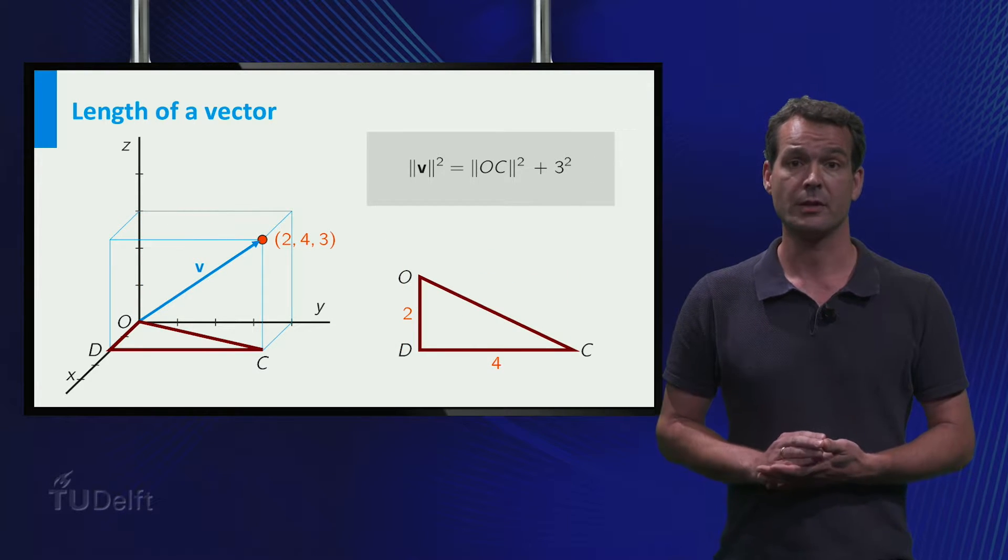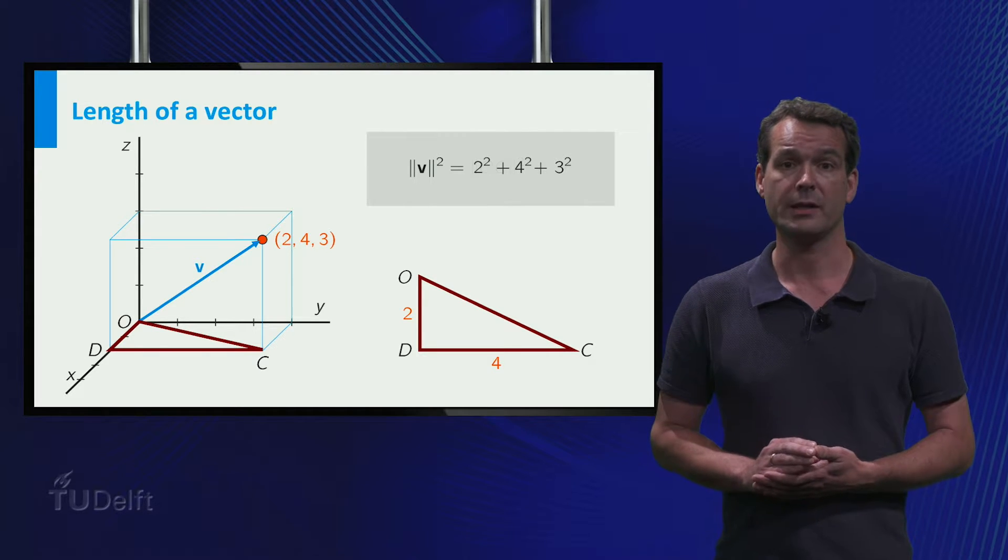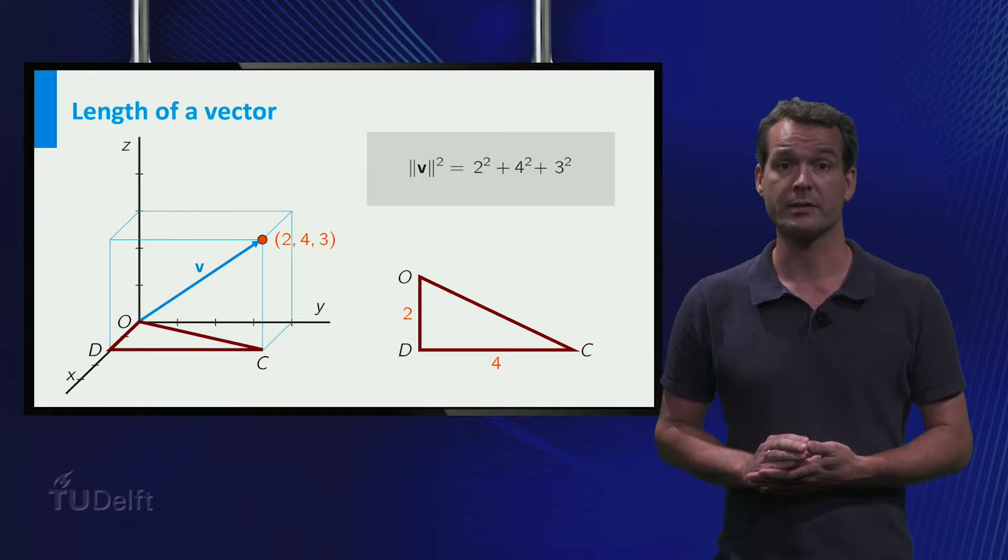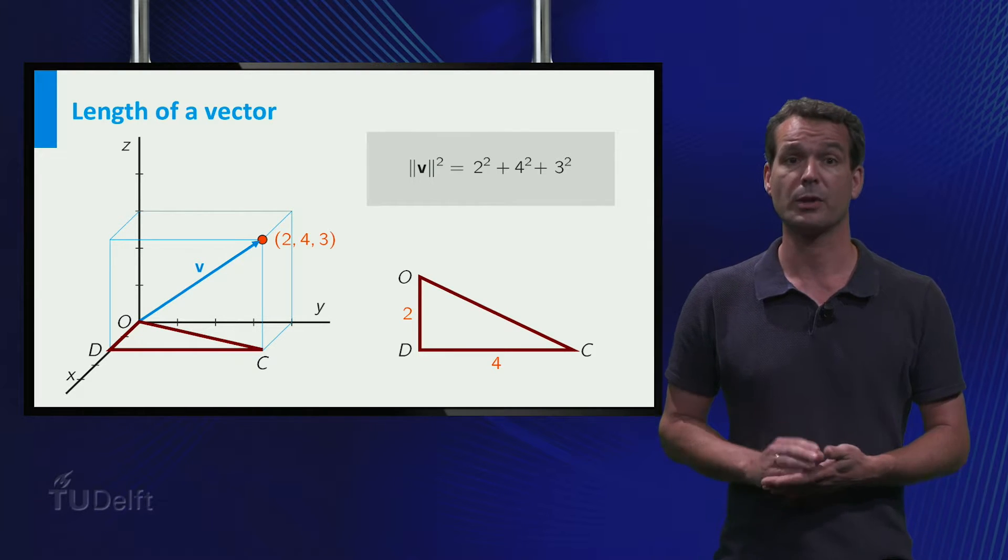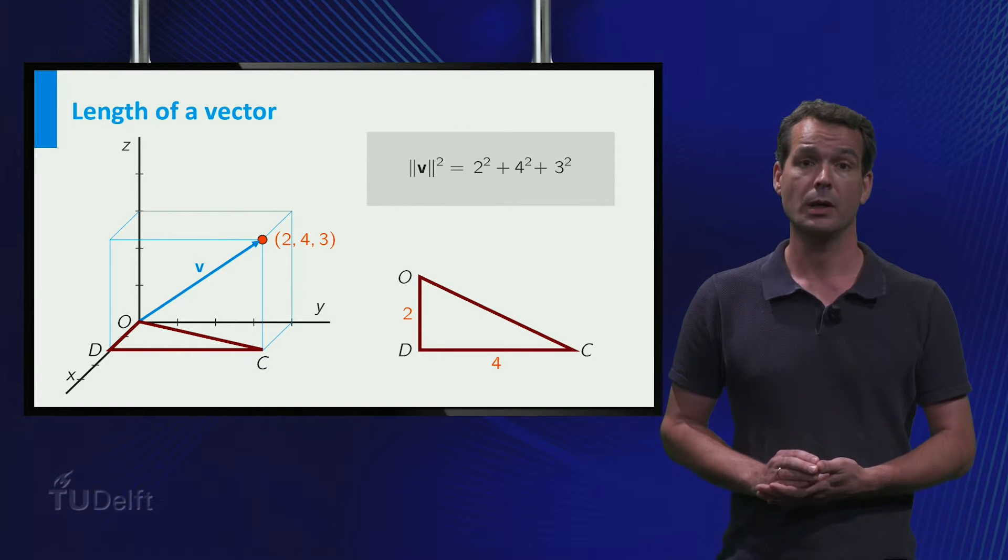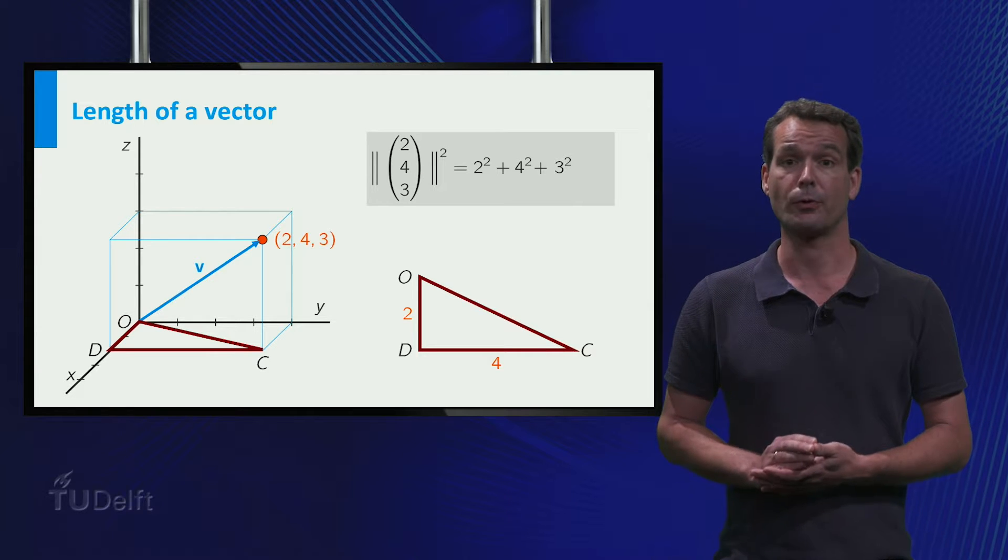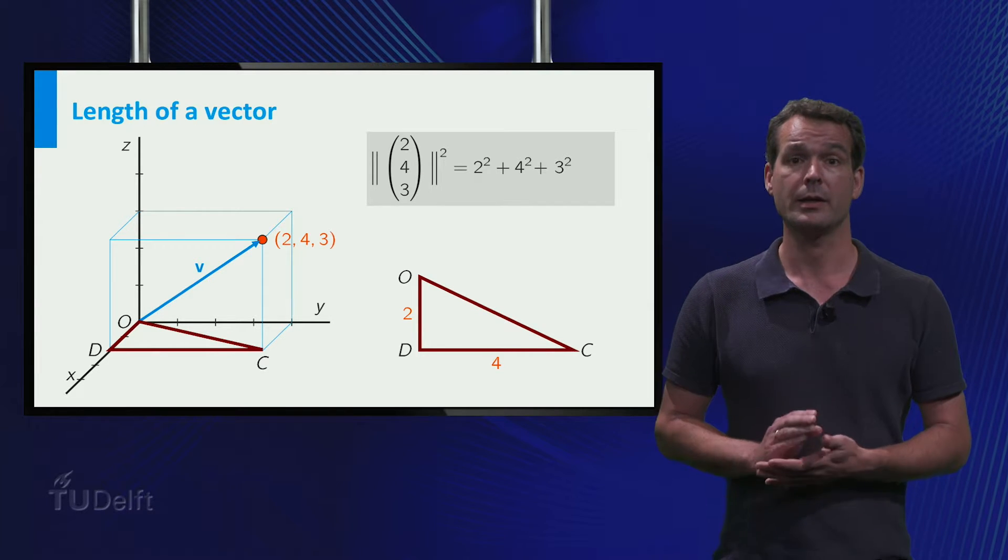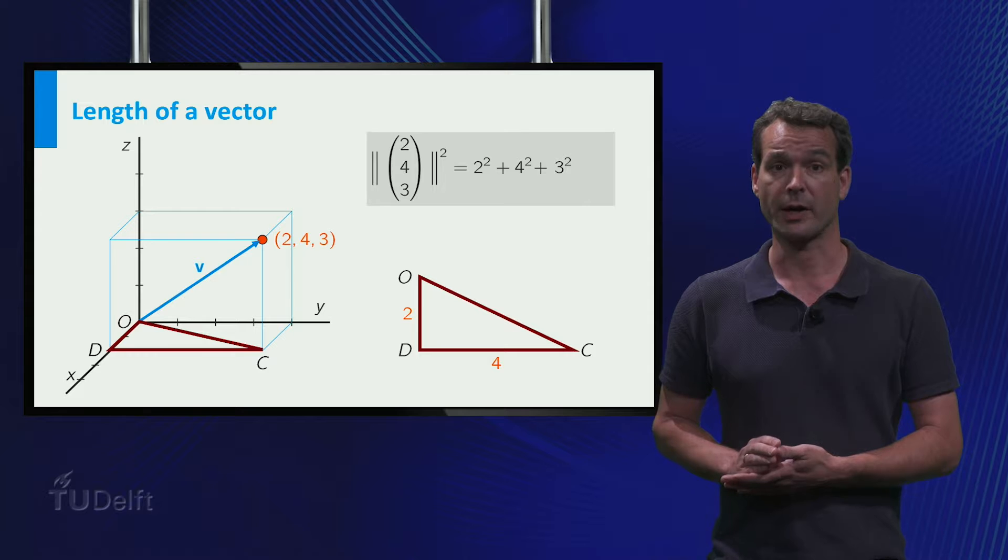We can do this using the triangle OCD in the x-y plane. We see that the length of OC squared is equal to 2 squared plus 4 squared. So the length of the vector squared is 2 squared plus 4 squared plus 3 squared, that is 29.